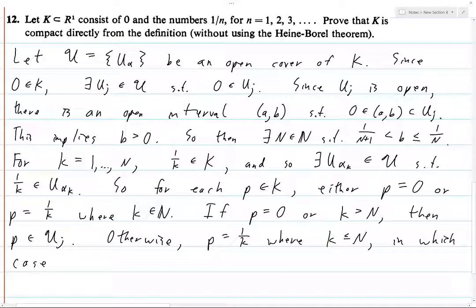And in this case, we have P being an element of U, this should not be fancy U, so U alpha K.